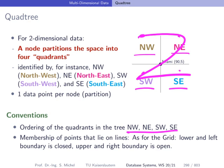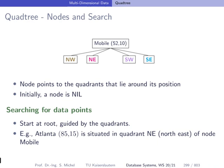The membership of points that lie on lines we can define, like we did for the grid, that the lower and left boundary is closed and the upper and right boundary is open.